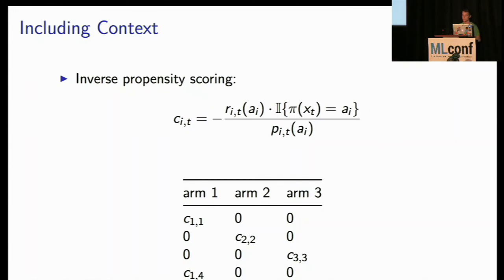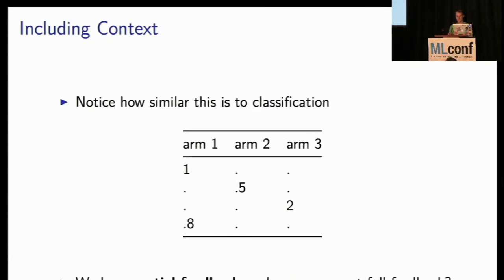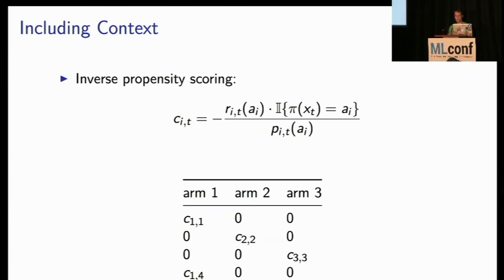And the reason I have this indicator function here, the I times that pi X, what that's saying is that value is one when we're looking at a place where our arm chose what was in the data set. So like if we're looking in row one, it's the times when we chose arm one. And in row two, it's when we chose arm two. So we can just fill in that data set with zeros everywhere where we don't have feedback, and then this re-weighted cost when we do have feedback. And the reason why I have it negative here as a cost, you'll see in just a second, because if we think about those as costs, we can just think about this as a cost-sensitive classification problem, which is a problem I think most of us know how to deal with.